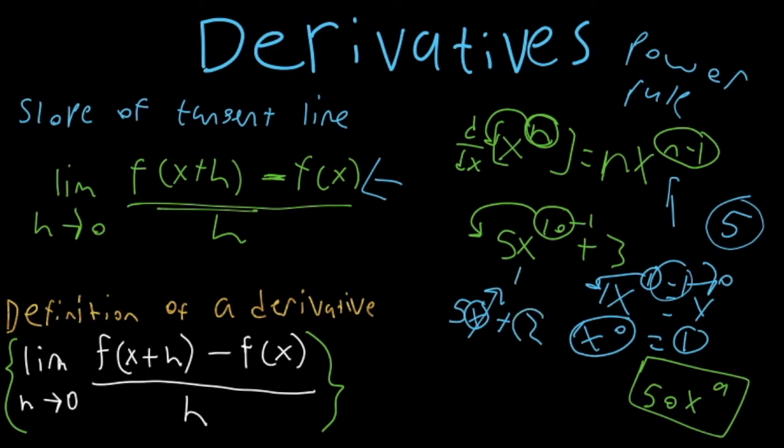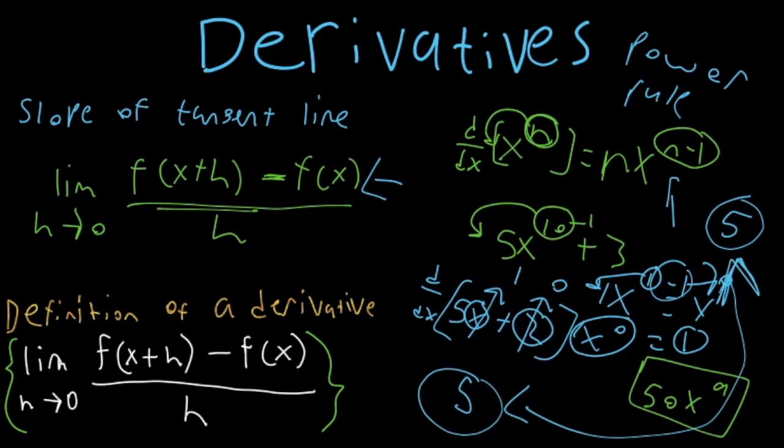And remember, we have a constant by itself, so this here would go to 0. So if we take the derivative of this entire function right here, we would just end up with 5. And as you can see, that matches with that one up there, which was the same thing we got using this formula right here.